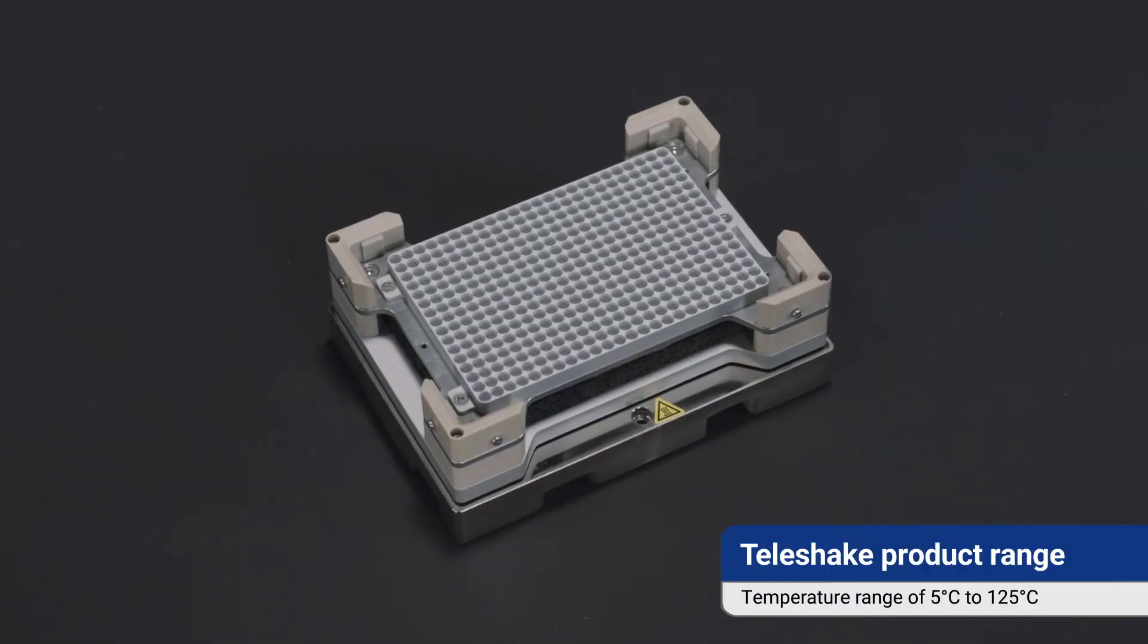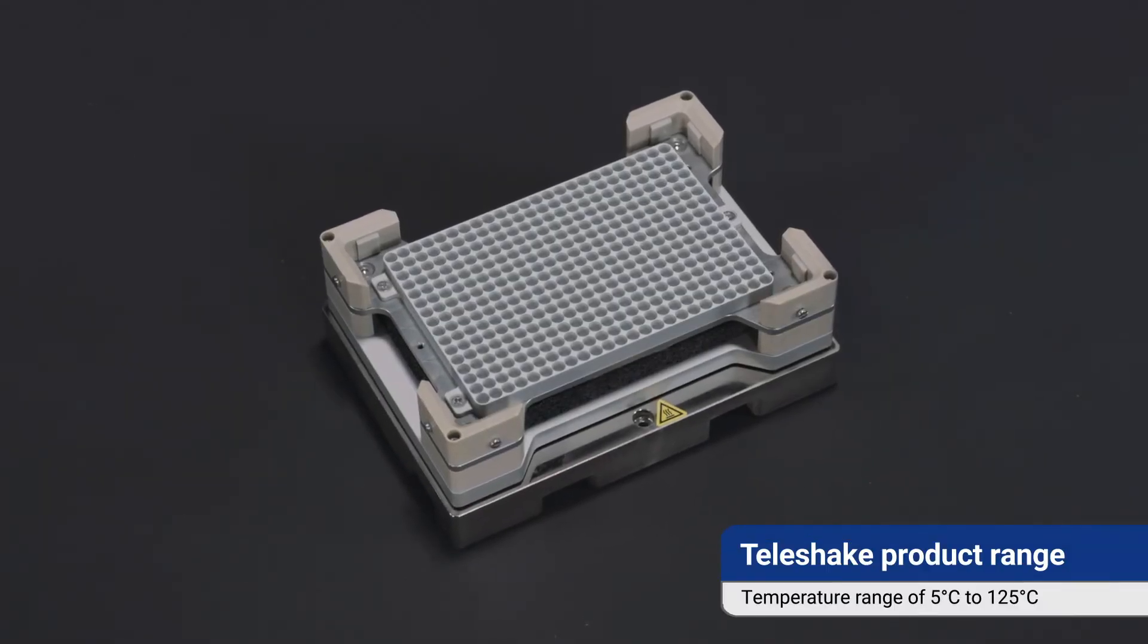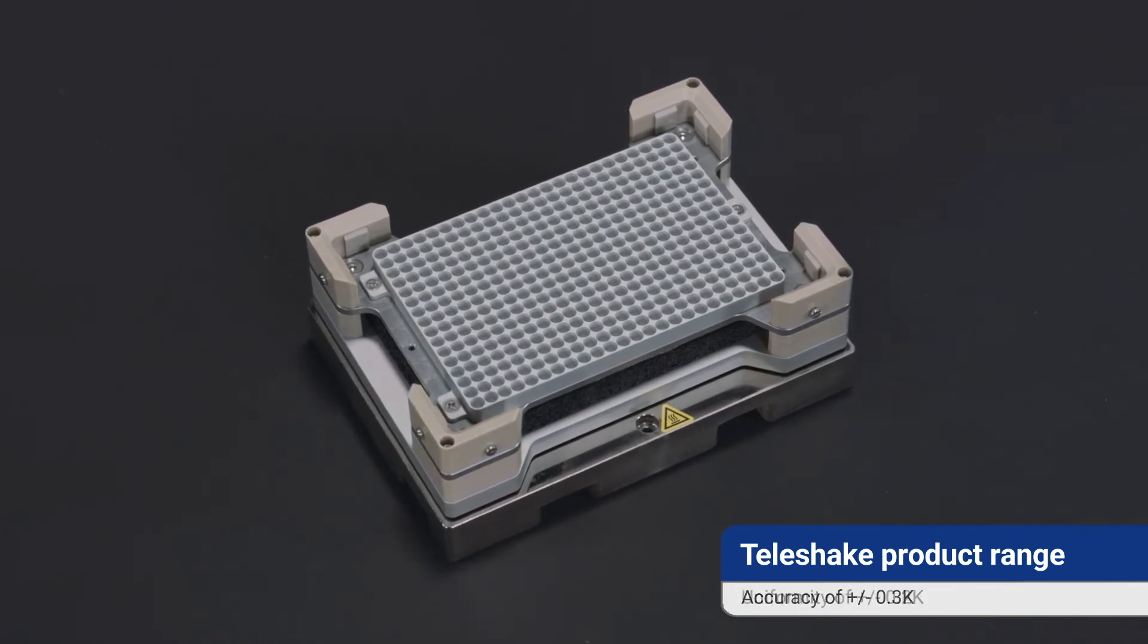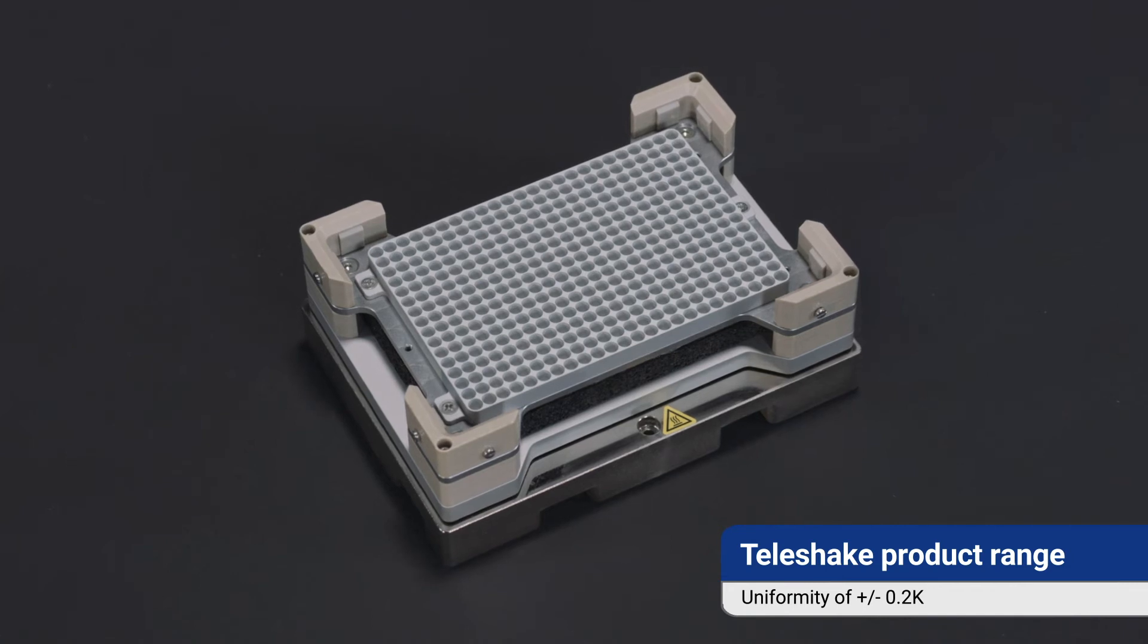With a temperature range of 5 degrees Celsius to 125 degrees Celsius, accuracy of ±0.3 Kelvin and uniformity of ±0.2 Kelvin, Inheko offers a huge range of options to cover your needs.